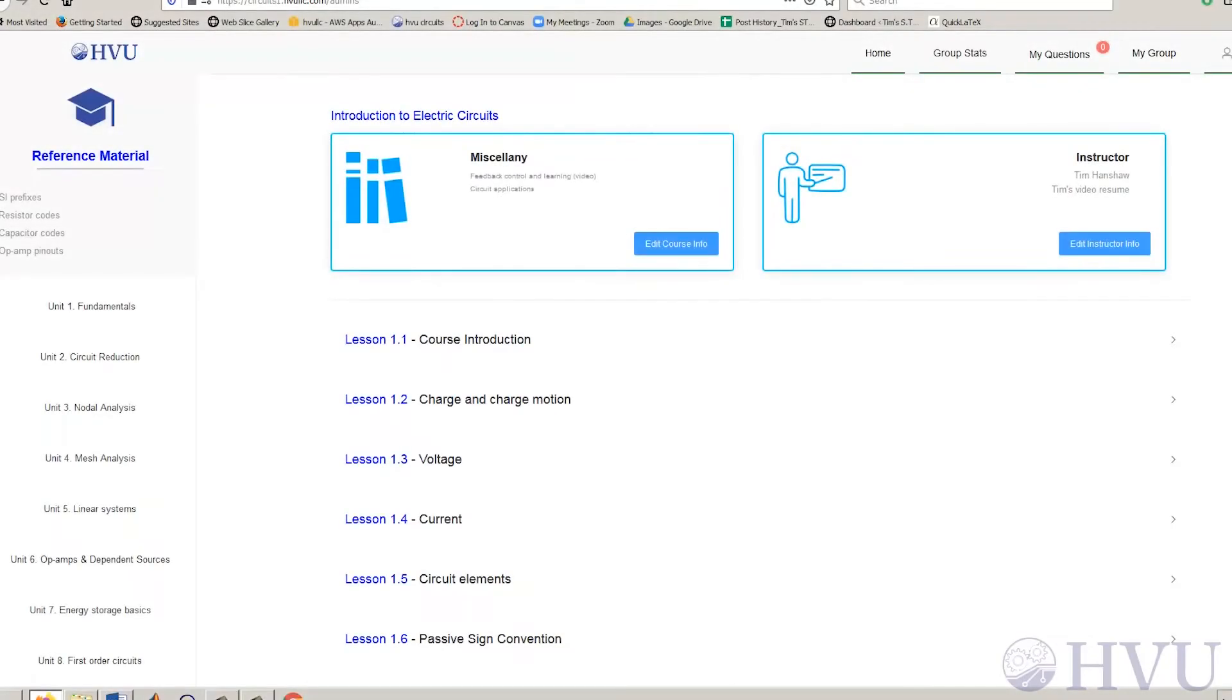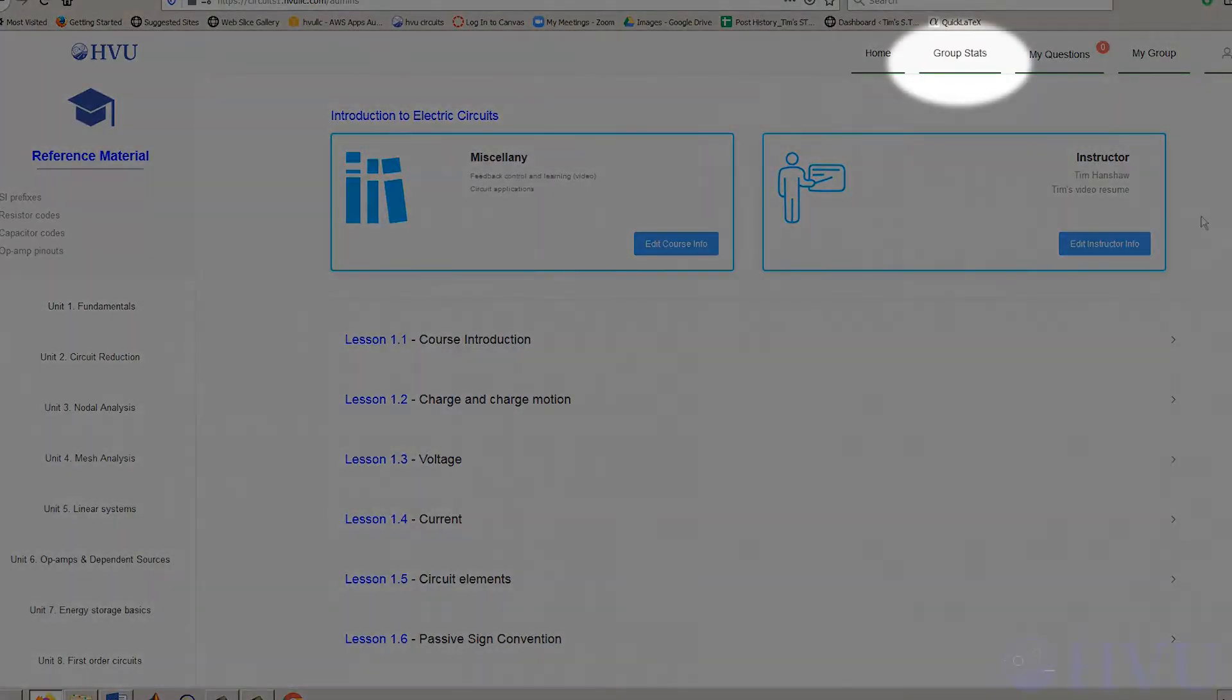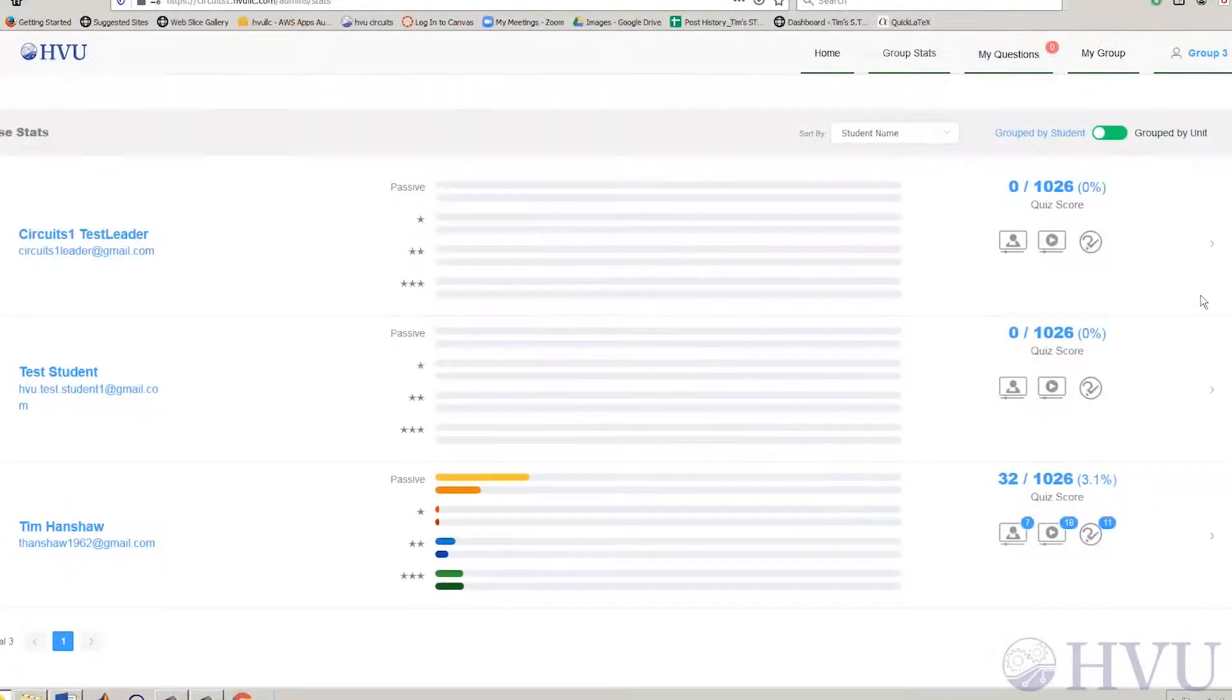In this video, I'll talk about the metrics available to track the progress of the people in your group. To monitor the progress of the people in your group, click on the Group Stats button in the menu bar. This provides a list of the students in your group along with the data for that student.